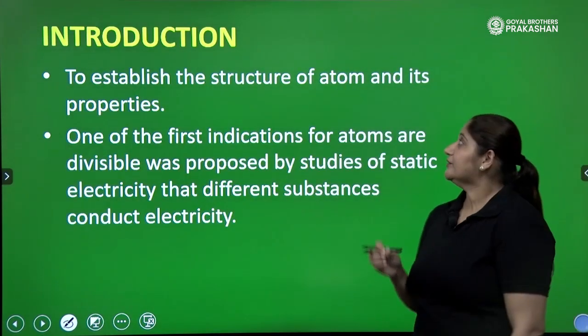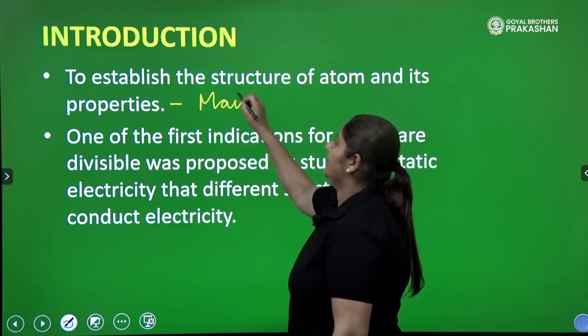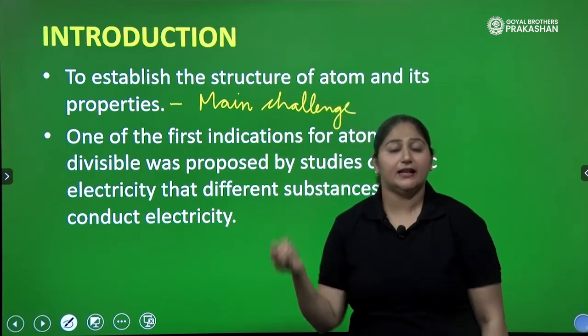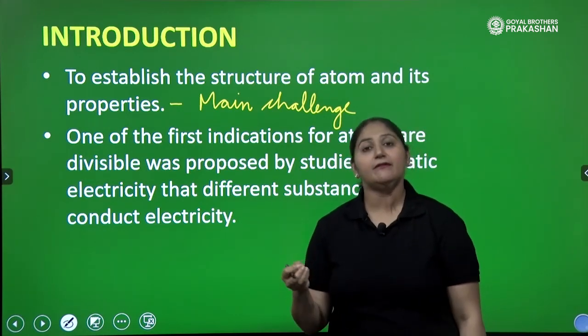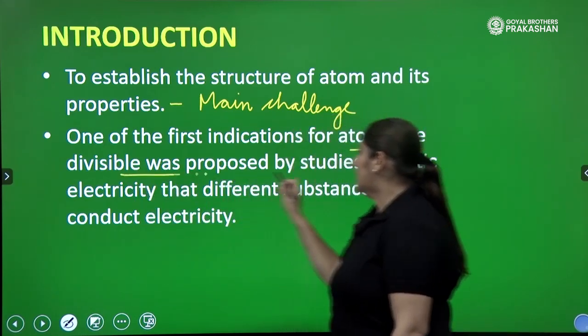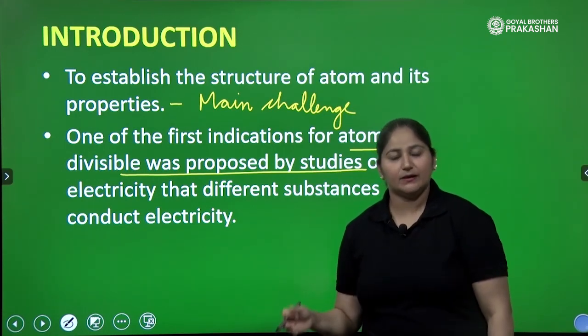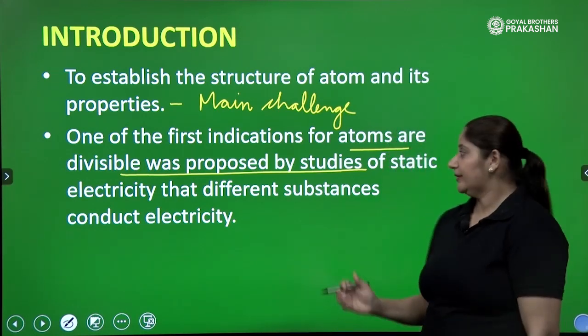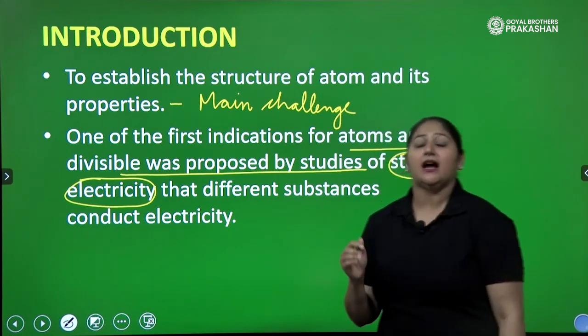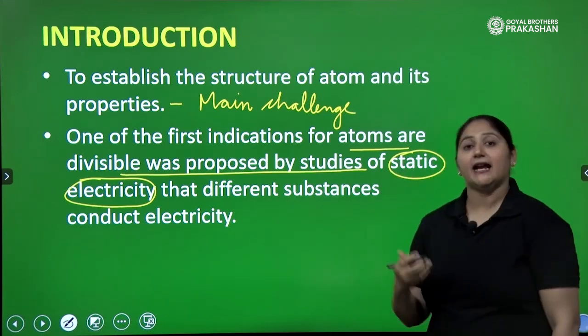To establish the structure of atom and its properties, this was the main challenge. How can we find out the structure of atom? Because atom is very tiny, its radius is calculated in nanometer. One of the first indications for atoms are divisible was proposed by studies of static electricity. Initially John Dalton said that atoms are indivisible, but there was proof given by the studies of static electricity, which actually focused on that definitely there are charged particles in atoms.